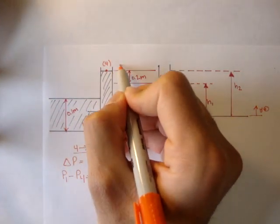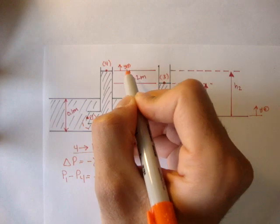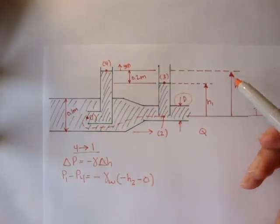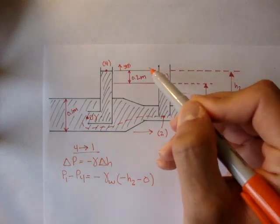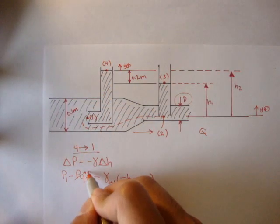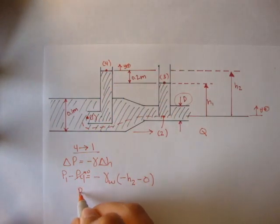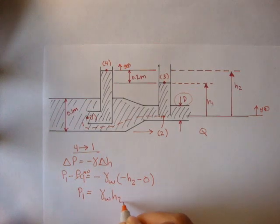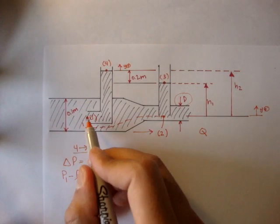So here, in this case, I set my datum here, just temporarily. So the change in height would be negative h2. And pressure at four is zero because it's open to the atmosphere. So we find that pressure of one is equal to just gamma of water times h2.